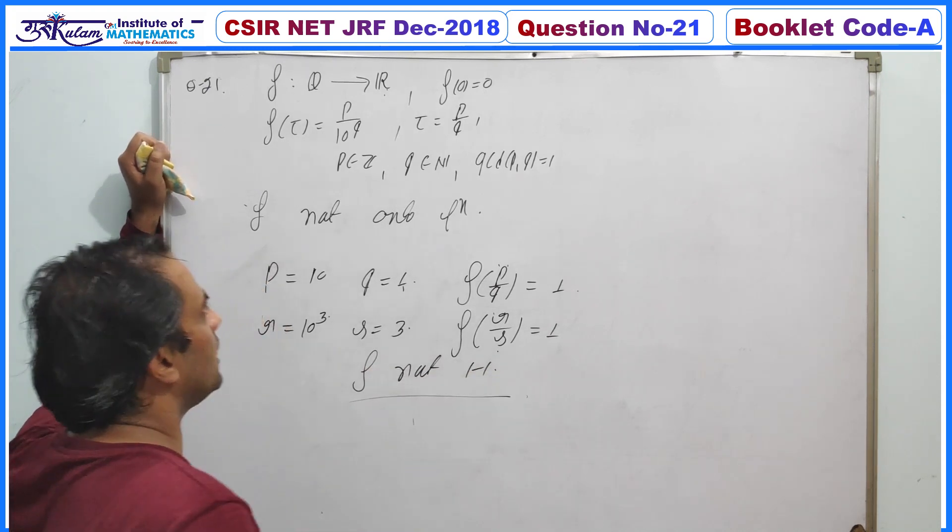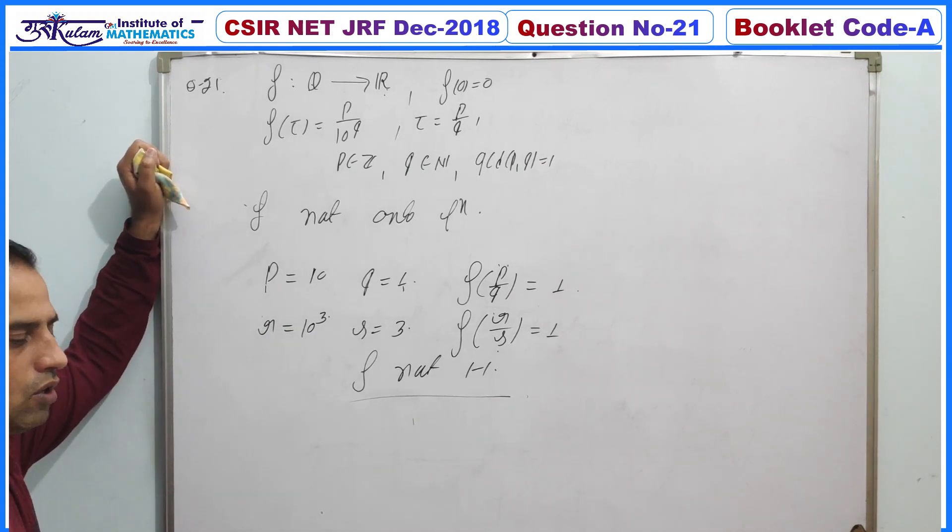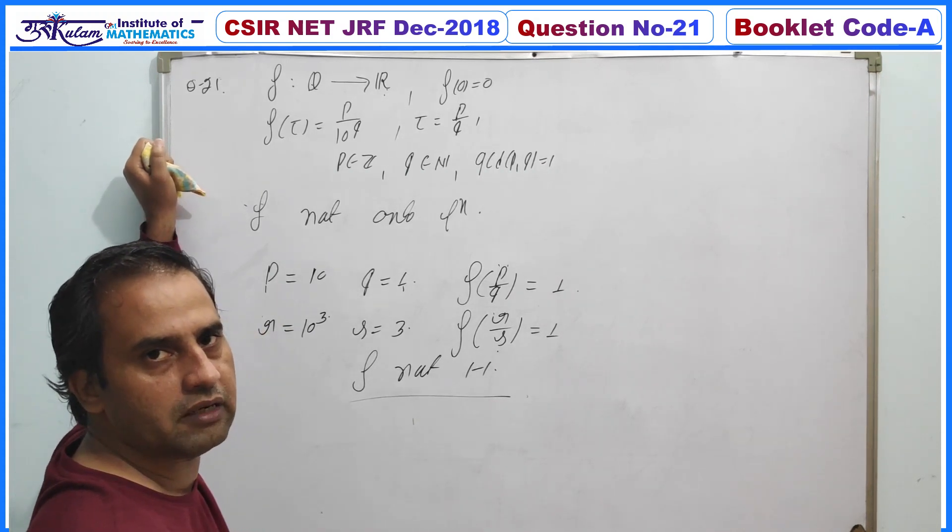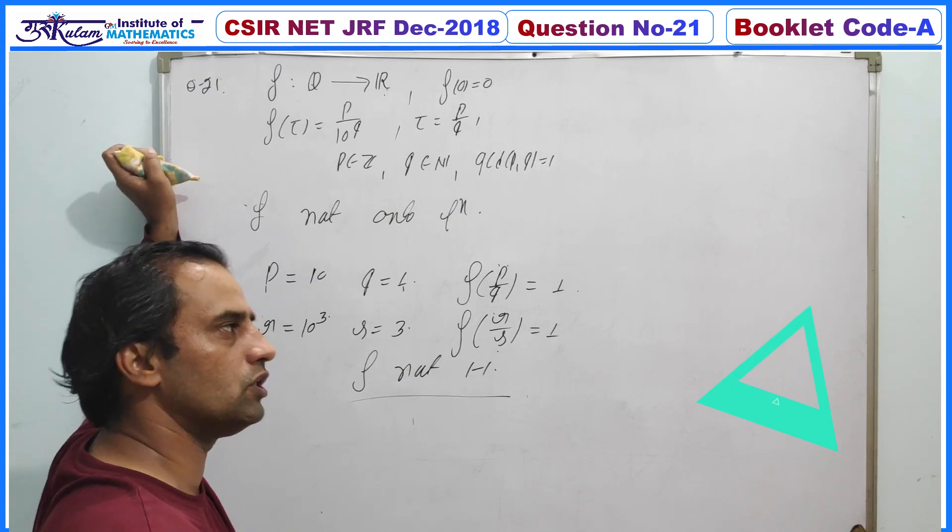So this f is neither one-one nor onto. So your fourth option is the correct option; remaining all options are false.